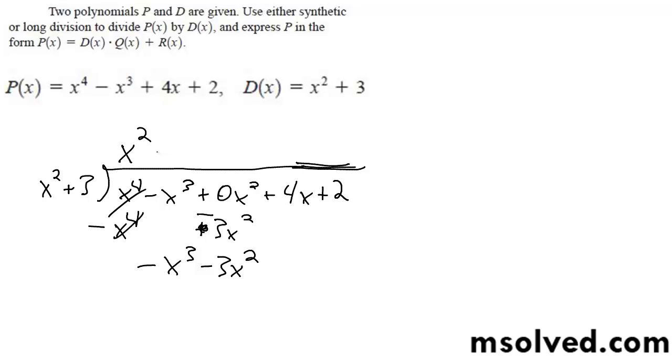So x squared goes into x cubed minus x times. The x cubed terms cancel out.